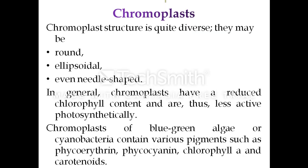Chromoplast structure is quite diverse; they may be round, ellipsoidal, or even needle-shaped. In general, chromoplasts have a reduced chlorophyll content and are thus less active photosynthetically. Chromoplasts of blue-green algae or cyanobacteria contain various pigments such as phycoerythrin, phycocyanin, chlorophyll A, and carotenoids.